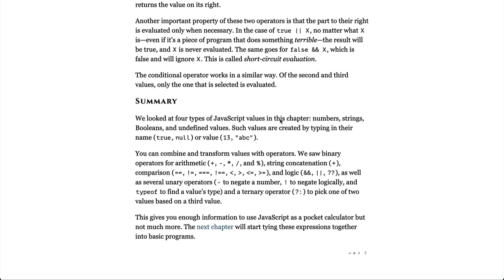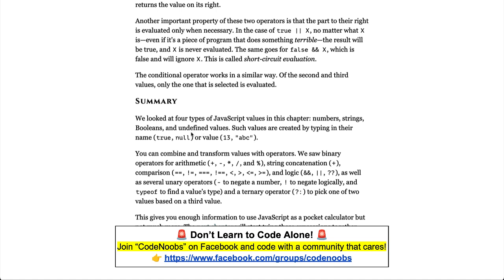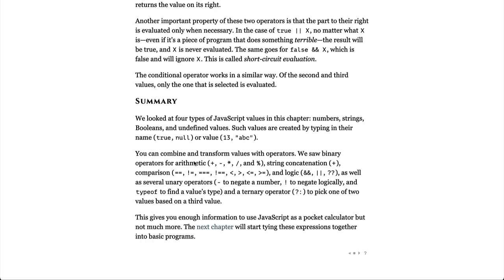Summary. We looked at four types of JavaScript values in this chapter: numbers, strings, booleans, and undefined values. Such values are created by typing in their name, true, null, or value 13, abc. You can combine and transform values with operators. We saw binary operators for arithmetic, plus, minus, multiply, divide, and modulo, string concatenation, plus, comparison, equal, not equals, triple equals, double not equals, less than, greater than, less than or equal to, greater than or equal to, and logic, and, or, as well as several unary operators, negative to negate a number, exclamation mark to negate logically, and typeof to find a value's type, and a ternary operator, question mark colon to pick one of two values based on a third value. This gives you enough information to use JavaScript as a pocket calculator, but not much more. The next chapter, we'll start tying these expressions together into basic programs.